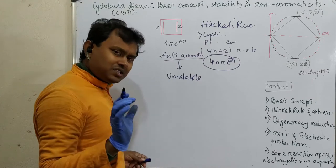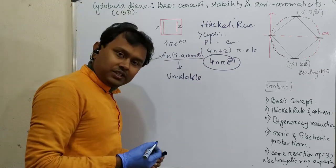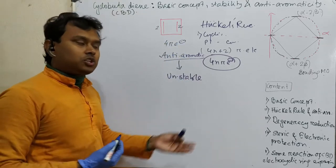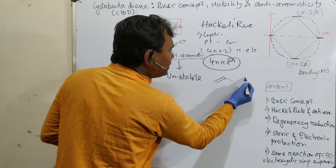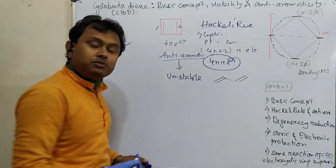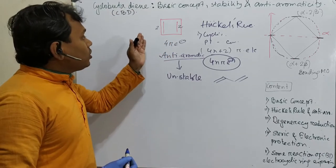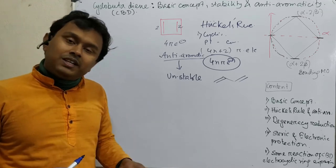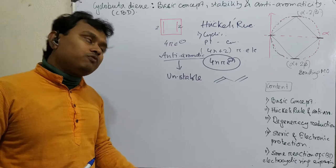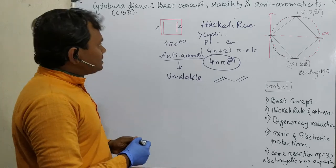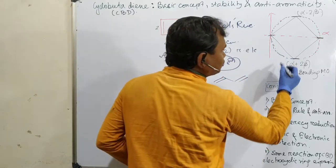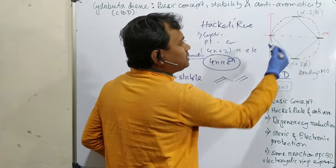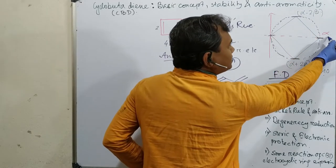If you haven't watched that video, please go through it. Cyclobutadiene is unstable compared to its corresponding acyclic analog, 1,3-butadiene. Now the question is: how to stabilize it and what is the reason for this instability? Let's first discuss the reason. If you see the Frost diagram, this is the first diagram.